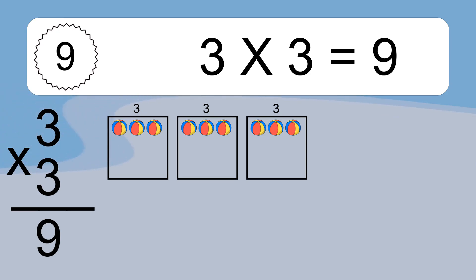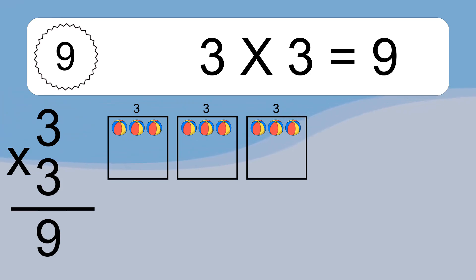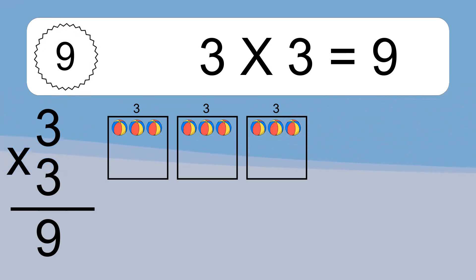3 times 3 equals 9. We have 3 boxes and each box has 3 colorful balls inside. If you count all the balls in all the boxes together, you will have 3 times 3 balls.